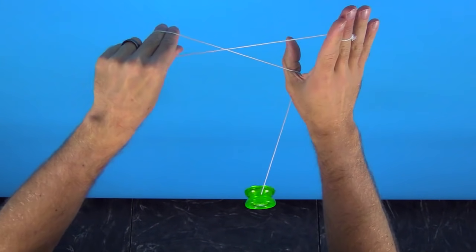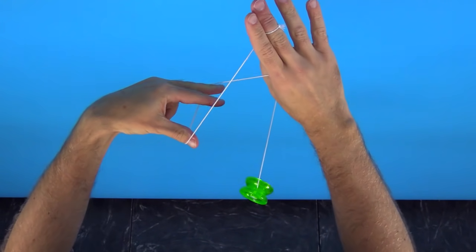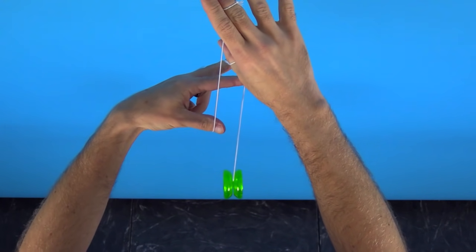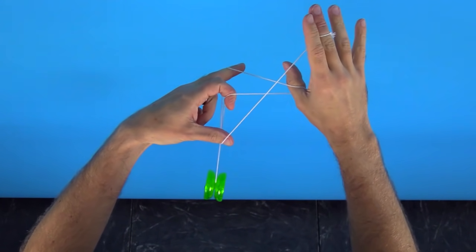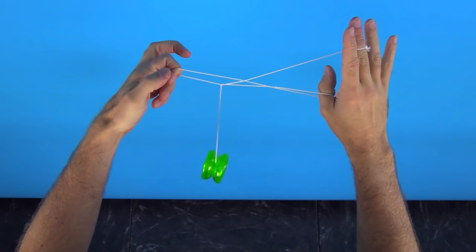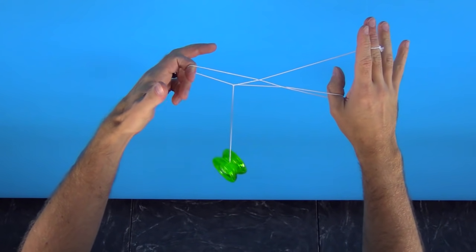Now you're going to bring that hand down, which will create this little triangle here, and you're going to take your first finger and pull the string coming off the yo-yo through that triangle, and then let the rest of the string just fall right off the finger and thumb of that hand.